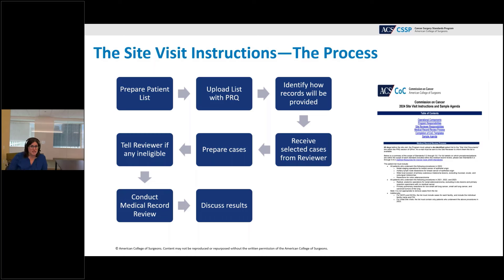You will receive selected cases from your site reviewer — seven cases per standard. As you prepare those cases, if any are ineligible for the standard — the most common issue being surgery not performed for curative intent — let your site reviewer know. They can then select an alternative eligible case. It is completely expected that you communicate with your site reviewer when a selected case doesn't fit the parameters.